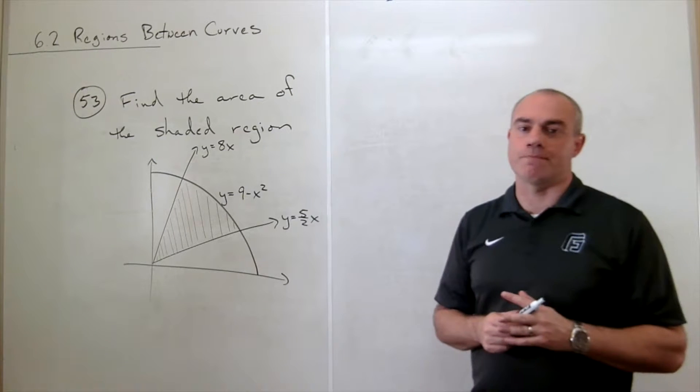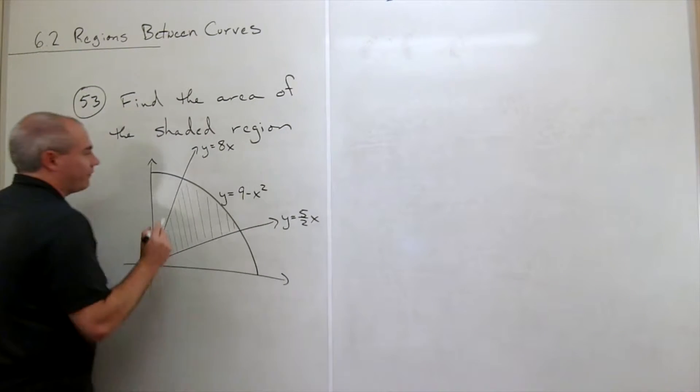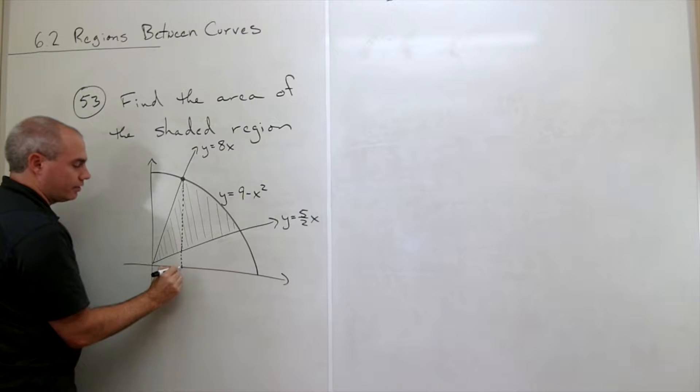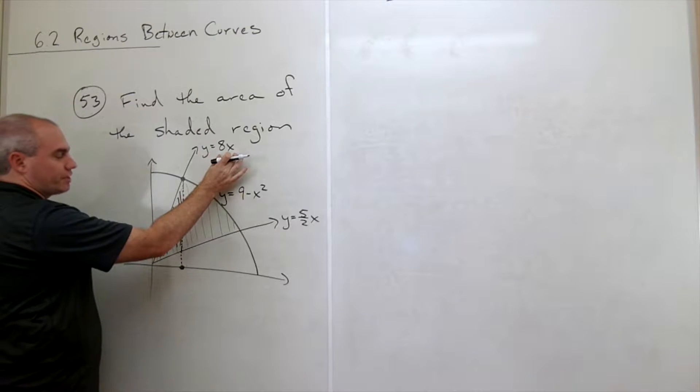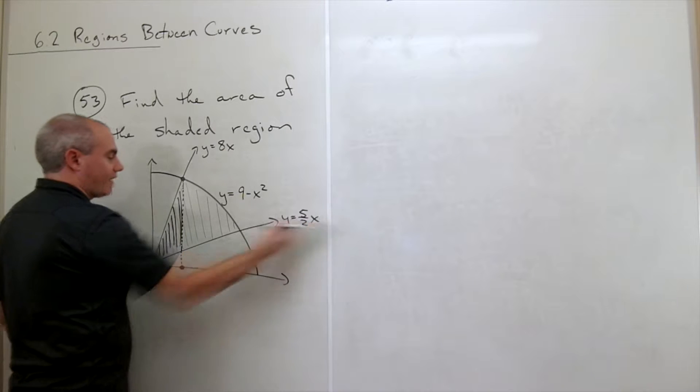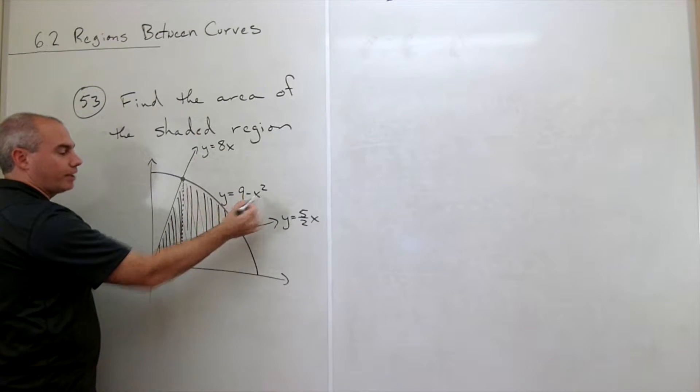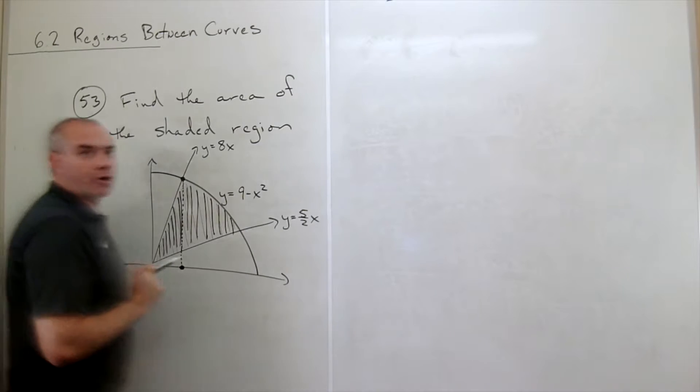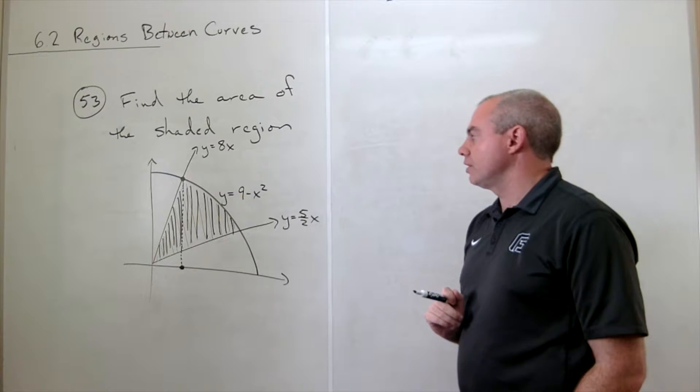We have to divide this thing up into some pieces to see how to integrate it. If I look at this point right here and just take a line straight down from that, I get some x value. Before I get to this point, there's a clear top function and bottom function. The top function is the 8x, the bottom function is the 5 halves x. After this point, the top function is the parabola, the bottom function is the 5 halves x. So if we just break this into two pieces, the problem becomes a lot easier to manage.